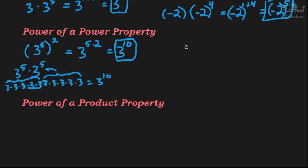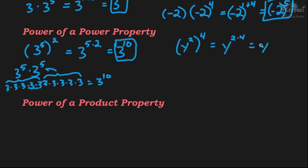Another example: y squared raised to the 4th power. All we need to do is multiply the exponents. So we have y to the 2 times 4, and since 2 times 4 is 8, the answer is y to the 8th power.